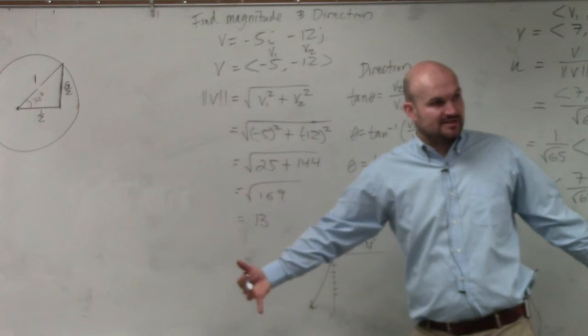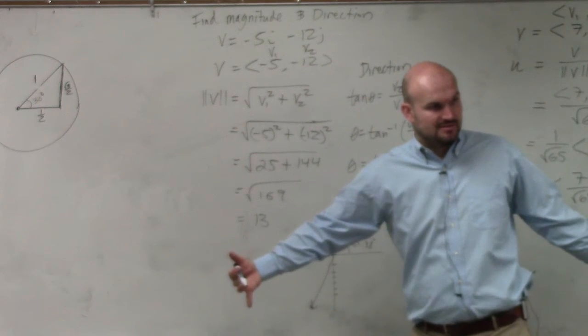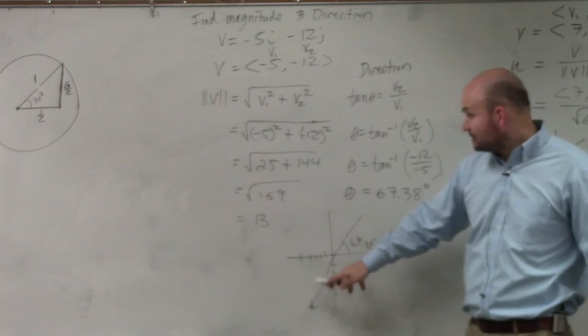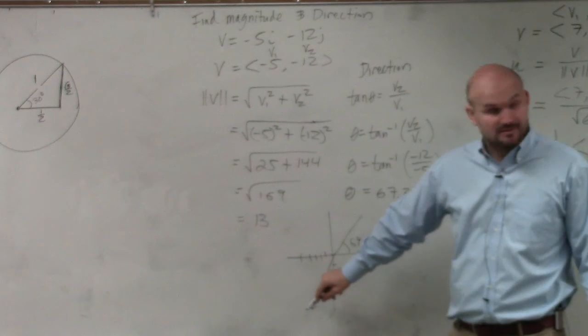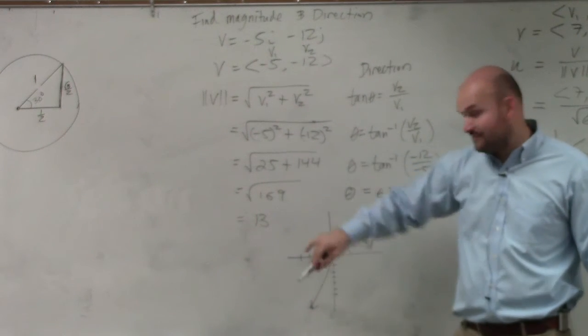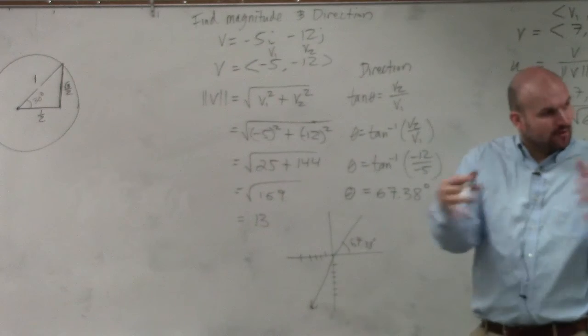But the problem is, excuse me, I want you guys to look at this. There's an issue with this. This vector, negative 5, negative 12, is down here, right? You guys can agree with me. It's down there. Negative 5, negative, and negative. But our angle is giving us this. Now, why is that?